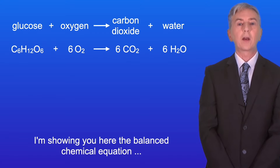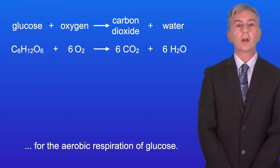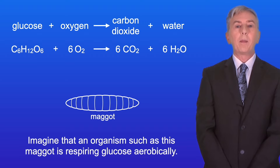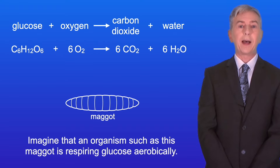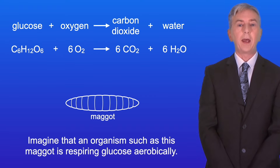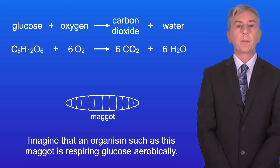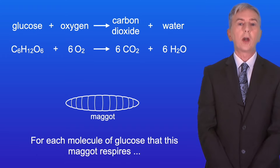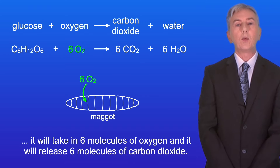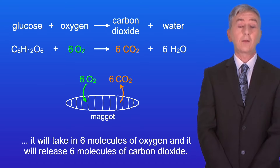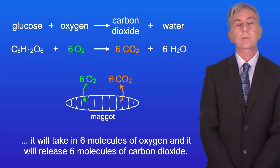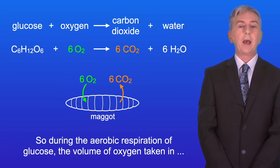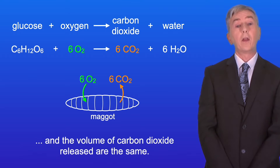I'm showing you here the balanced chemical equation for the aerobic respiration of glucose. Now imagine that an organism such as this maggot is respiring glucose aerobically. For each molecule of glucose that this maggot respires, it will take in six molecules of oxygen and it will release six molecules of carbon dioxide. So during the aerobic respiration of glucose, the volume of oxygen taken in and the volume of carbon dioxide released are the same.